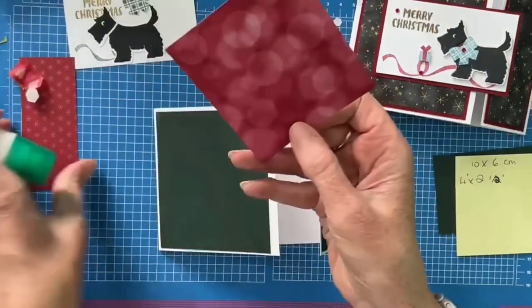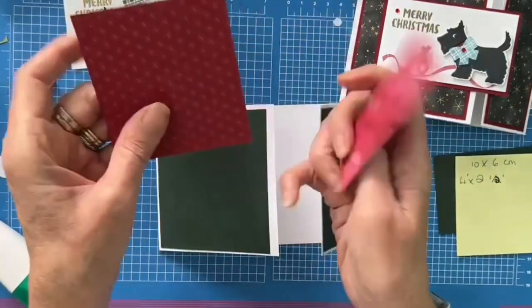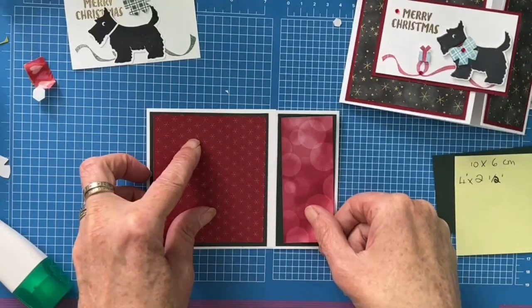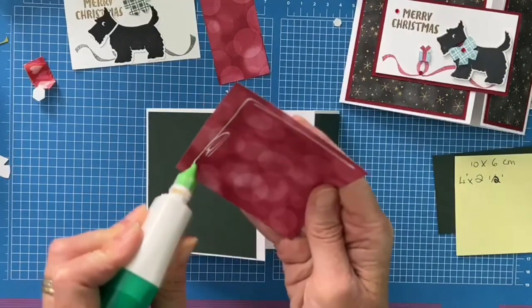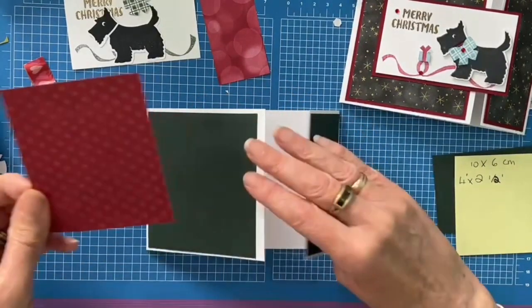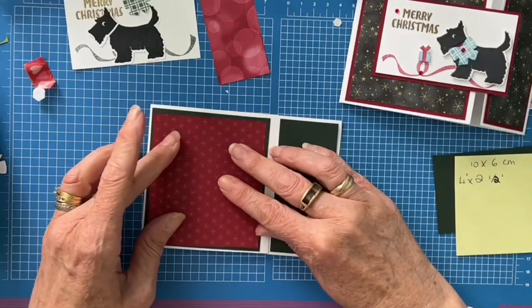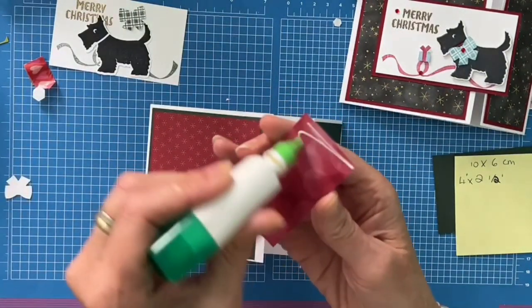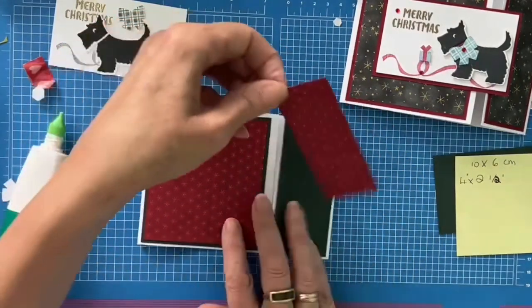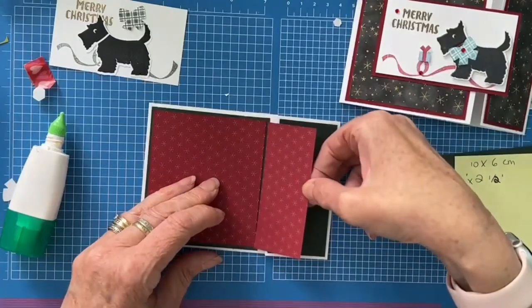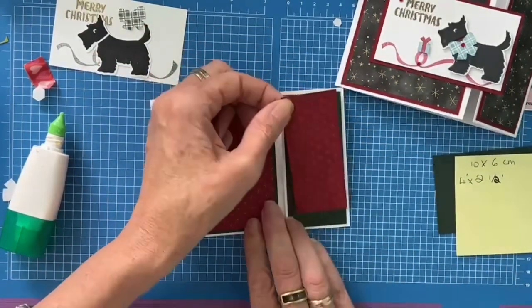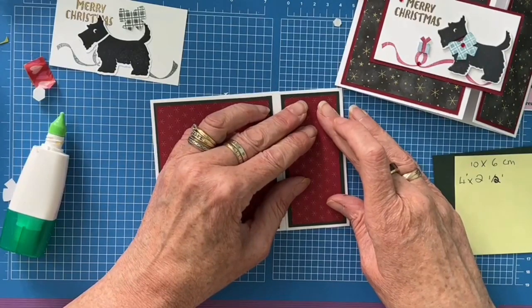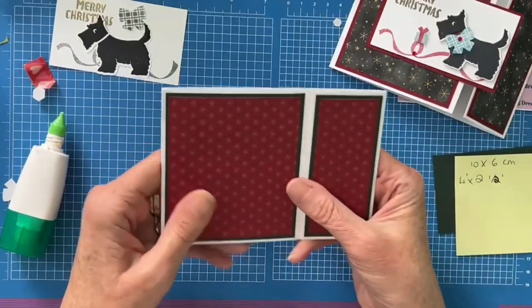And then we can glue our paper on as well. Now if you wanted to, you could actually have one side with the gold and one side opposite. Or you could have totally different colored patterns as well. So that'd be quite nice. But I think the gold is very regal looking. So I'm going to stick with the gold. And then lastly, this panel. Now if you're clever, you can match the patterns up as well. So it flows through nicely. There you go. So there's our card, base card.